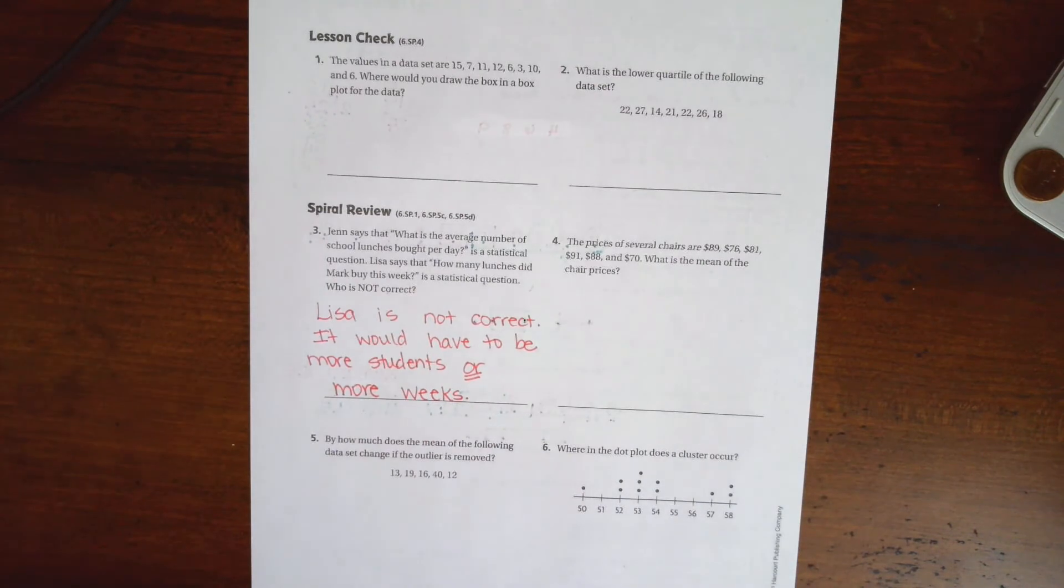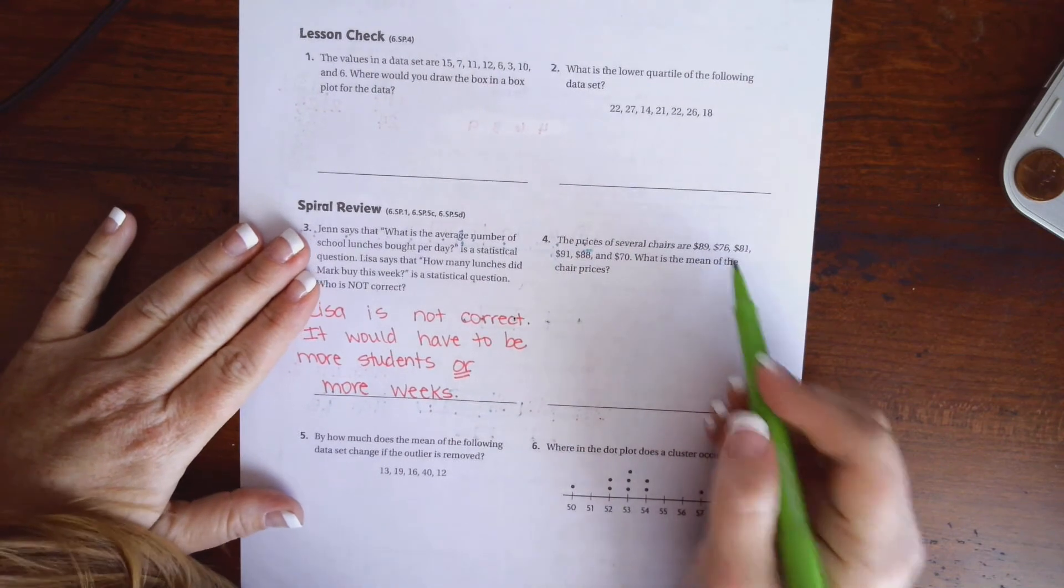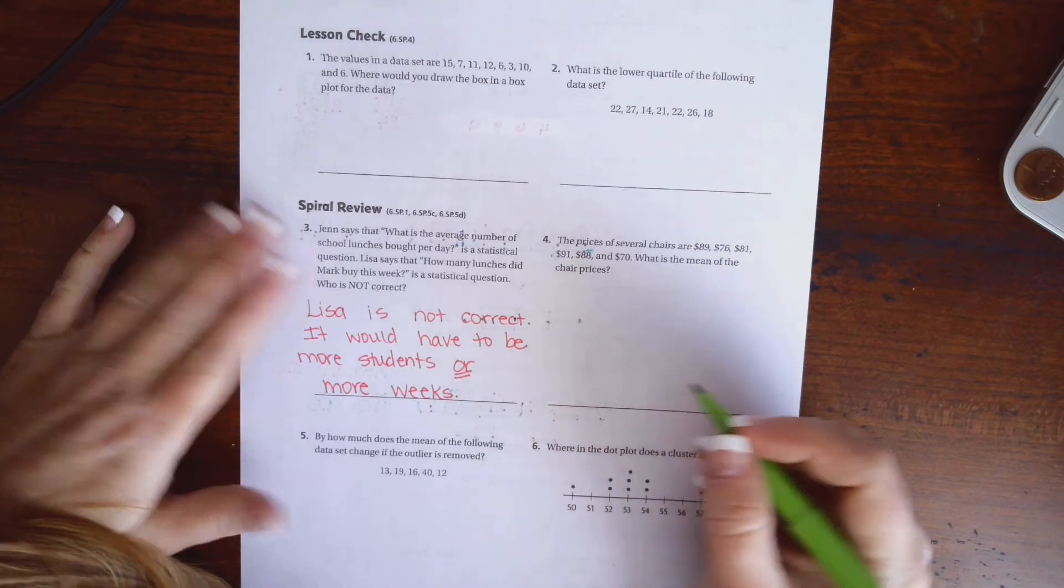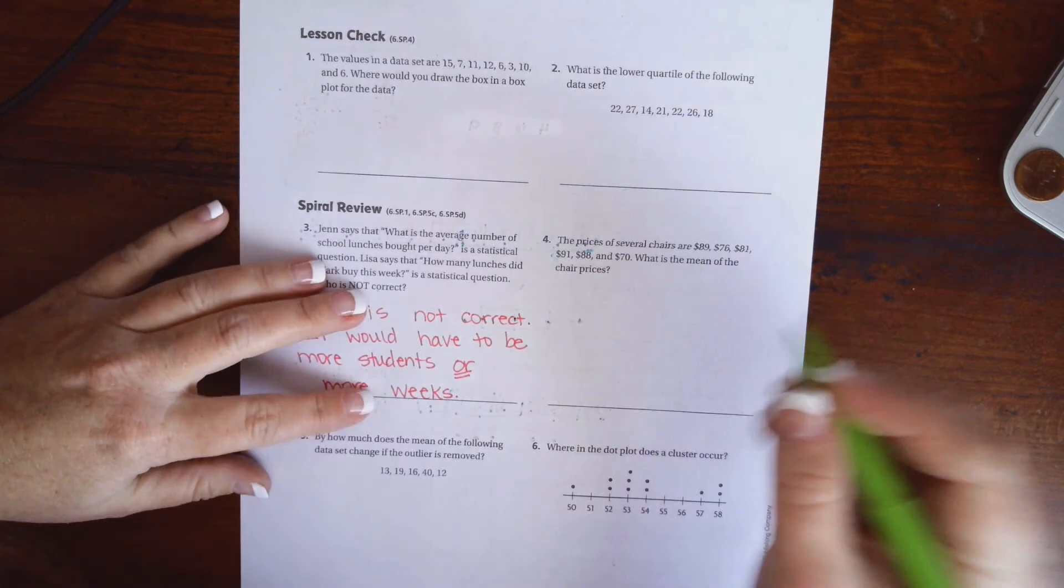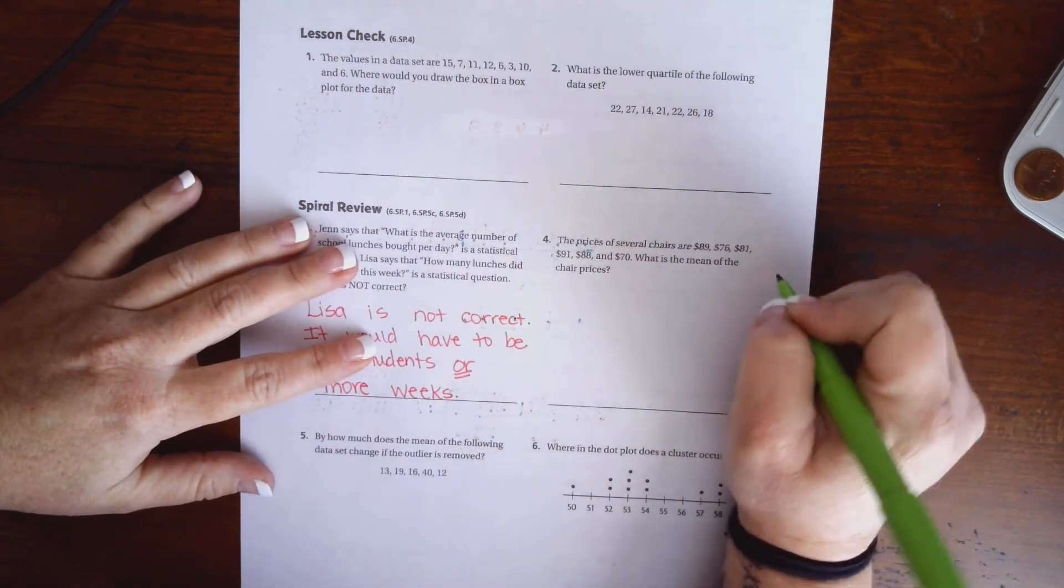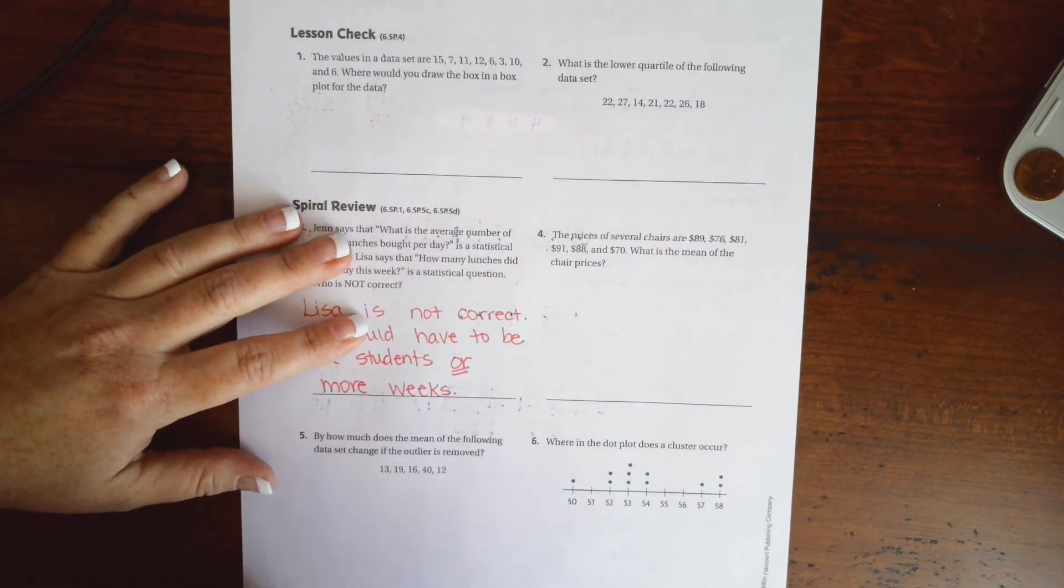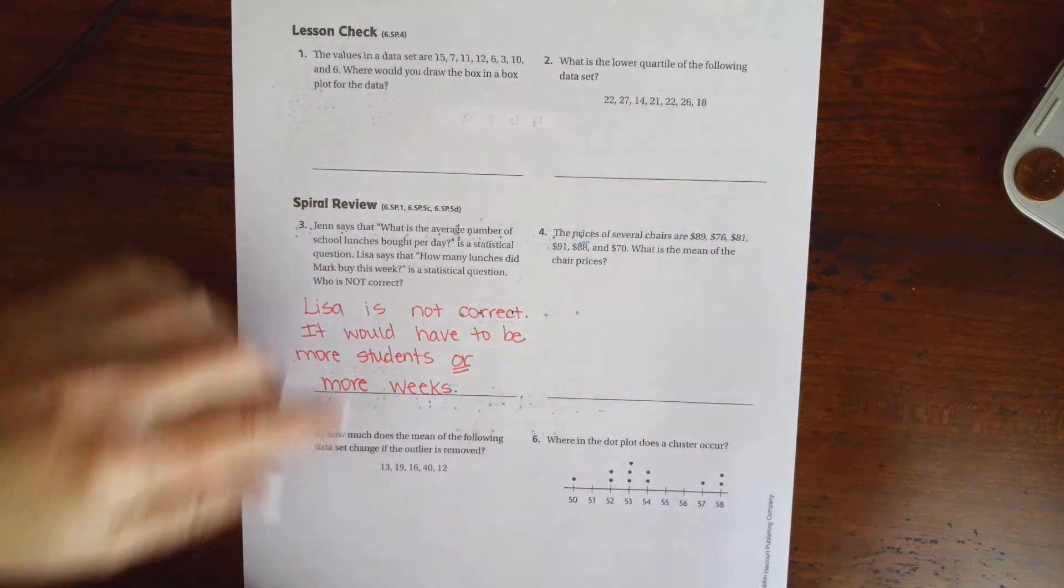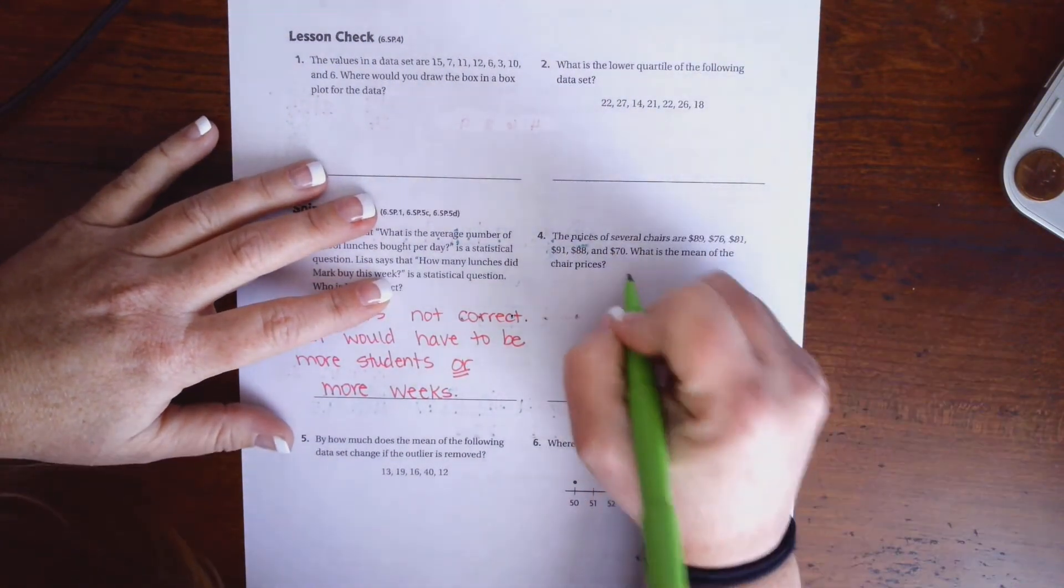The prices of several chairs are $89, $76, $81, $91, $88, and $70. What is the mean of all those chair prices? So we are going to have to add those up. I like to do something a little bit funky with the common core math, and I will show you. So I'm going to add up all of my 10 digits first, and then I'm going to add up all of my 1s.